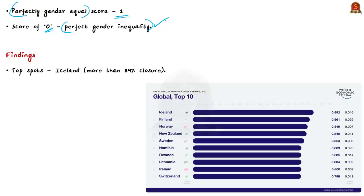Based on this background, let us see the findings of the 2021 report. First, note that the top spots have been retained by the Nordic countries — Denmark, Norway, Sweden, Finland, Iceland — and these Nordic countries have a gender gap closure of over 85 percentage points.